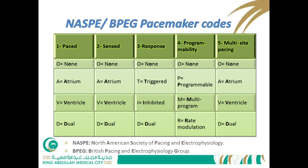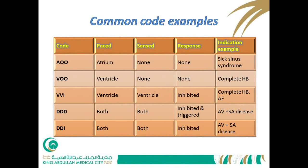Common code examples include AOO or VOO — the asynchronous mode — where the atrium or ventricle is paced without sensing or response. VVI means the ventricle is both paced and sensed; if the ventricle has its own electricity, the pacemaker senses it and is inhibited, not delivering its own stimulus.